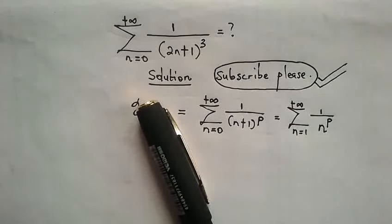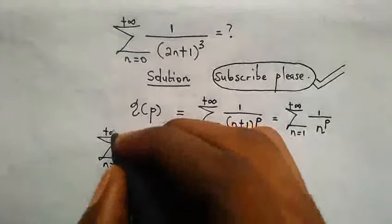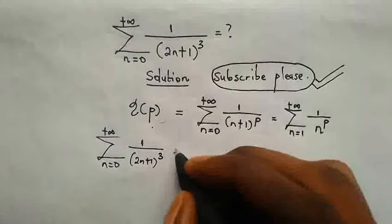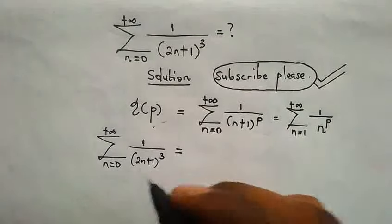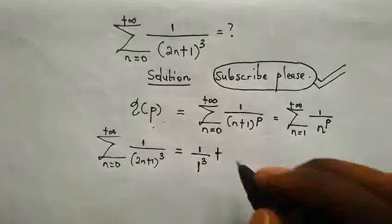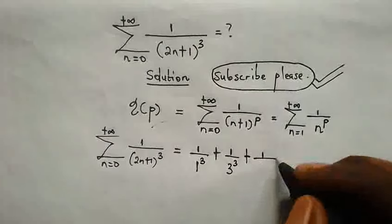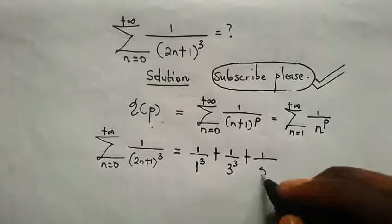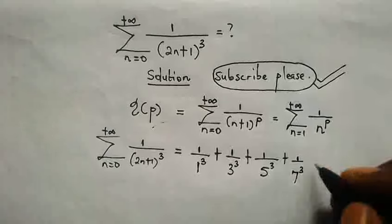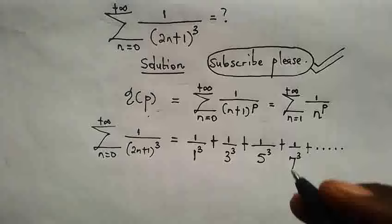Now we have the sum from 0 to infinity of 1 over (2n+1)^3. When n=0 we get 1 over 1³, plus when n=1 we get 1 over 3³, plus when n=2 we get 1 over 5³, plus 1 over 7³, and so on — we just have odd numbers in the denominators.